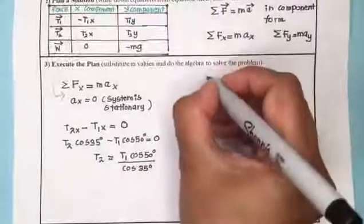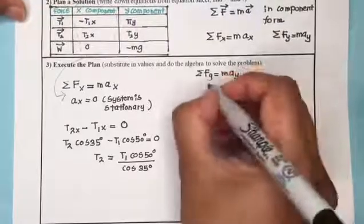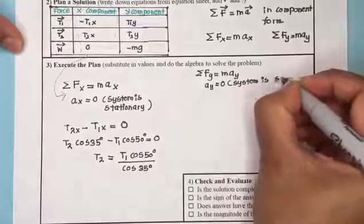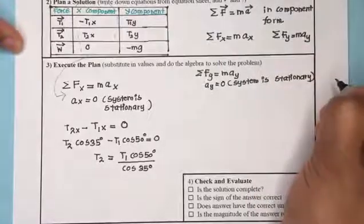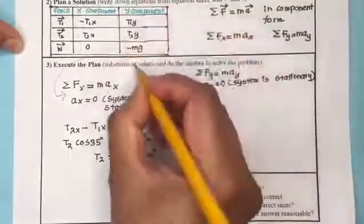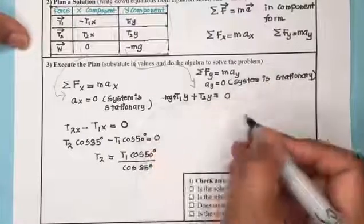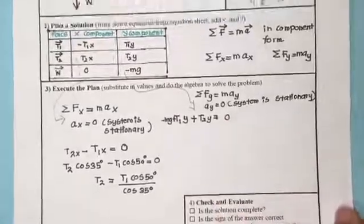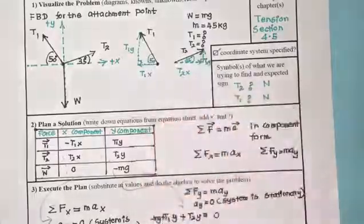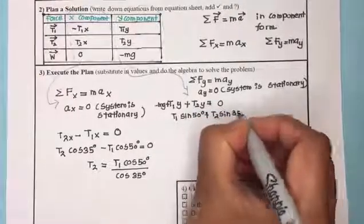Now applying Newton's second law in the y-direction: the net force in y equals mass times acceleration in y, and acceleration in y is also zero since the system is stationary. The y-components are T1y, T2y, and negative mg, and their sum equals zero. We express T1y and T2y in terms of sine of the angle, since they are the opposite sides of the right triangle.